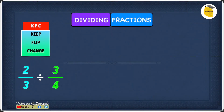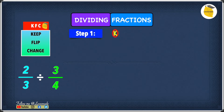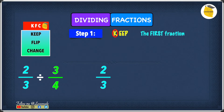Now let's see how to divide fractions using KFC for the next example. The example is 2 over 3 divided by 3 over 4. Step one is K — keep the first fraction, which is 2 over 3, so we're going to leave it as it is.